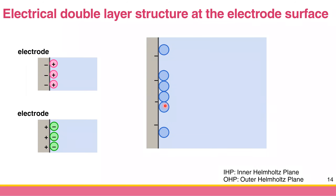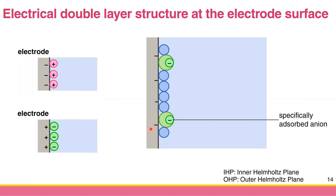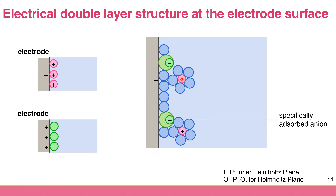There may be some species — maybe a counter ion, or maybe an ion with the same charge — that can be specifically adsorbed on the electrode. It can be a positive ion or negative ion, but it has some specific chemical interaction with the electrode. That's why the first layer is actually not the counter charge ions, but the solvent and some specifically adsorbed ions. This layer is called the Inner Helmholtz Plane. So this is the first layer.